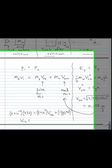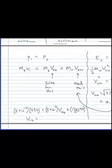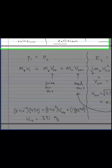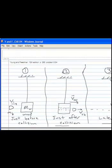And I end up with the velocity of the bullet as it emerges from the block 391 meters per second. So let's think about this for a second. We expect the velocity of the bullet to be less after it goes through the block. And it is. It starts out at 450 and it ends up at 391 meters per second.